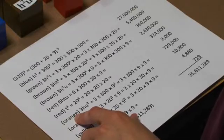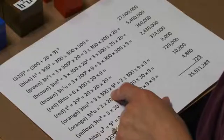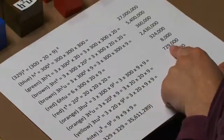We go next to the orange components starting with the 100 times unit squared. That would equal 3 times 300 times 9 squared or 729,000.